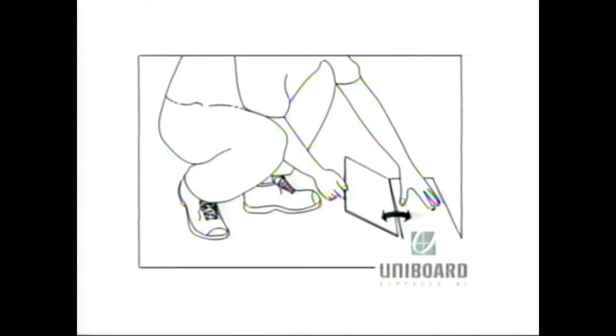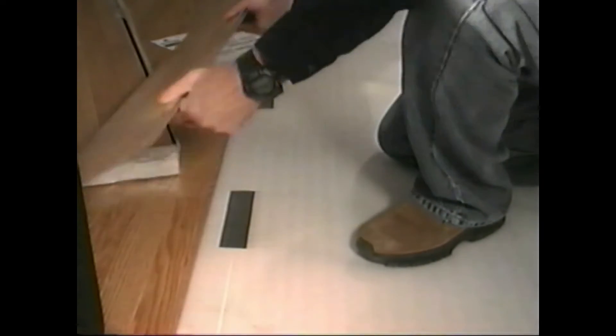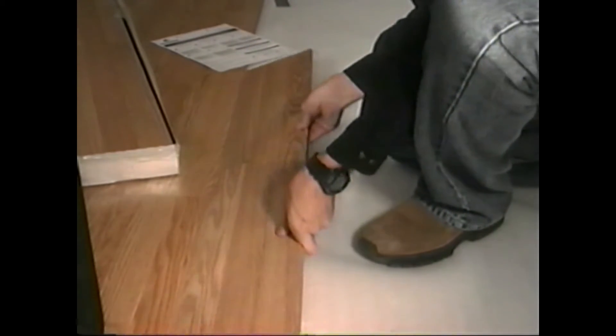Install the second row and all other rows. Insert the plank at a 45 degree angle. Shimmy up and down until the plank locks into place and lies flat on the base floor.